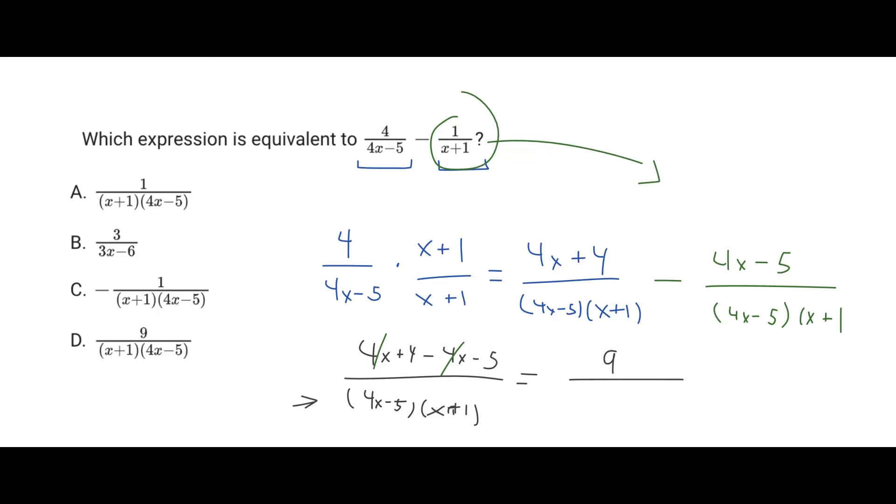So you have 9 on top, and then 4x minus 5, really messy but whatever, x plus 1. And so we have our equivalent expression right here. And we can see that actually matches up with answer choice D, and therefore that is our answer.